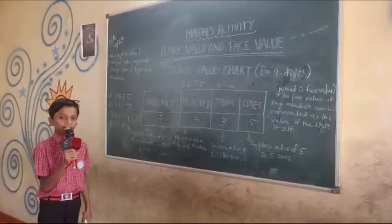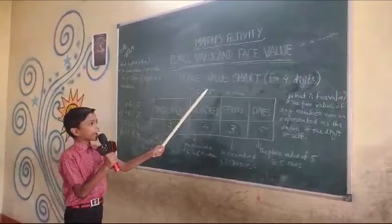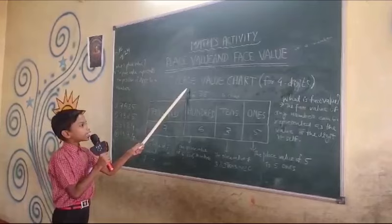Today's next activity is place value. Let us look at the place value of the number 5,324 using a place value chart.